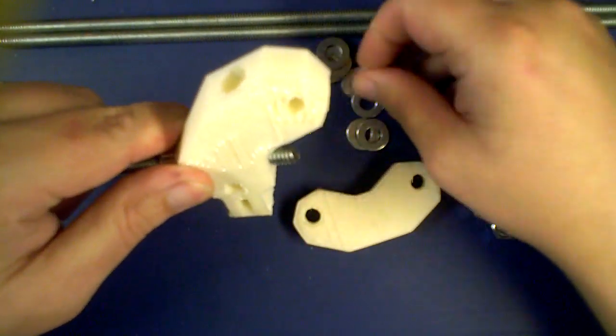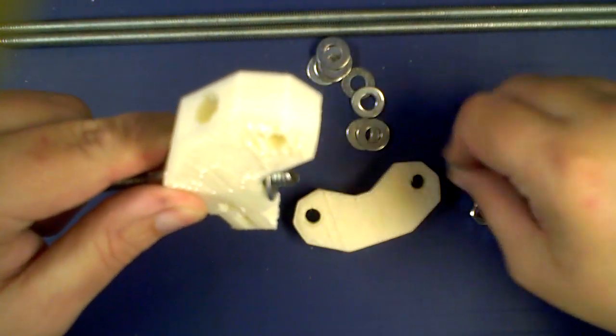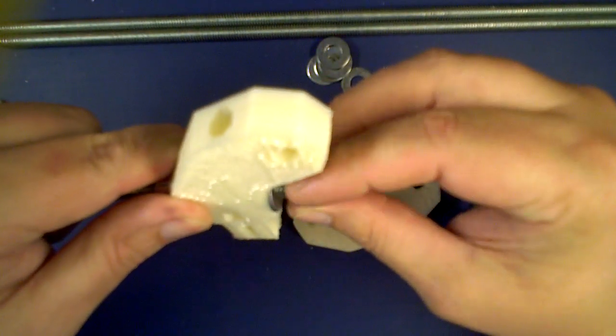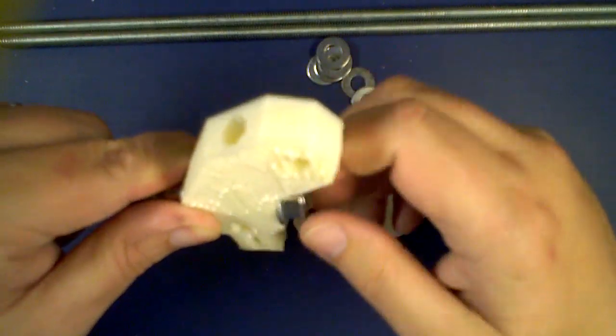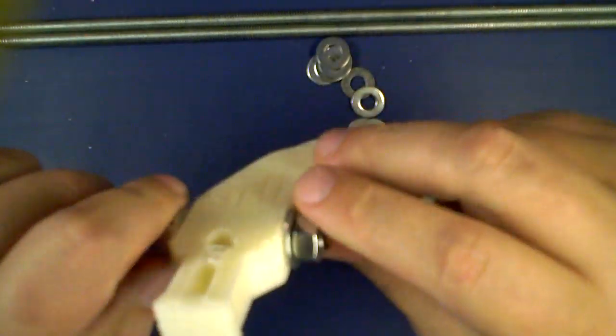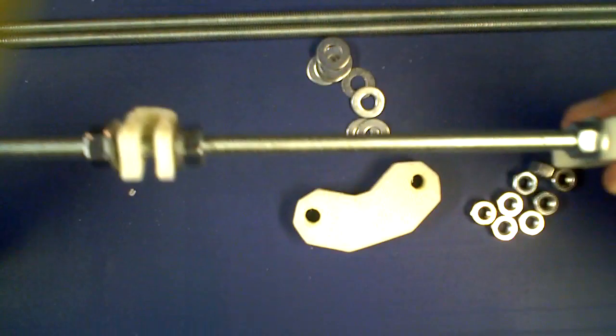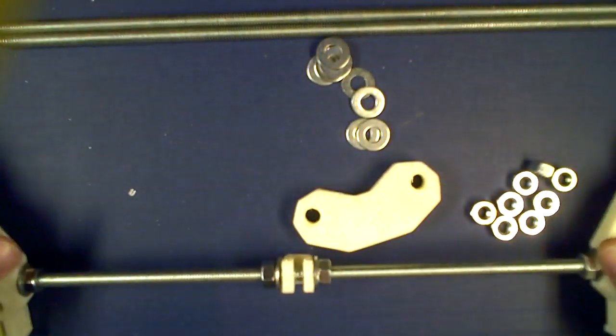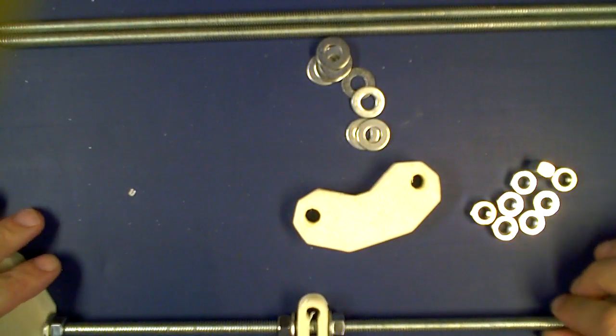Now don't really worry about the jigging of the distances at this point. What you're going to want to do is actually make sure to go out to the full length of the rod and you can go ahead and step it in a little bit later.